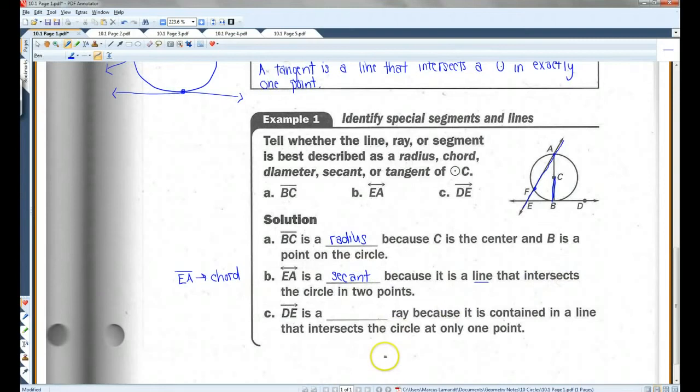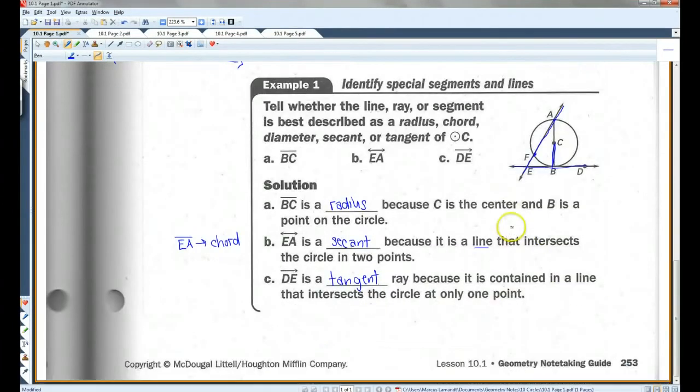Ray DE, that's this here. Difficult to draw straight lines, close enough. Ray DE is a tangent ray, because it is contained in a line that intersects the circle at only one point.